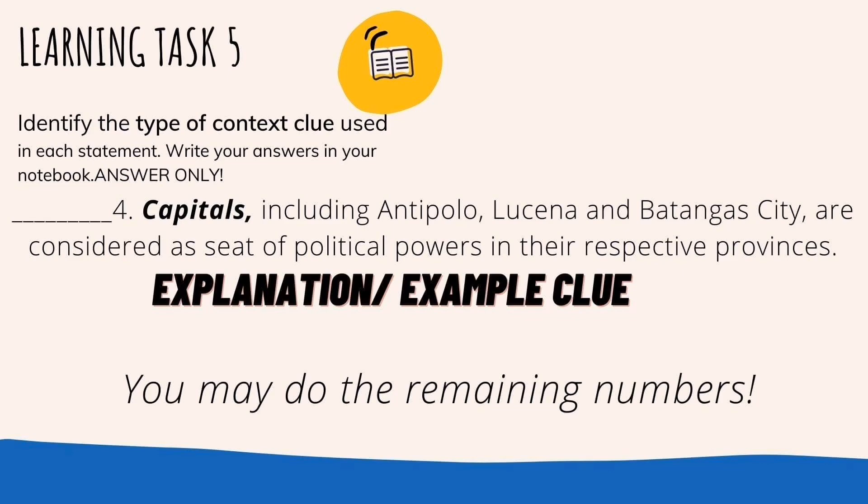Capitals, including Antipolo, Lucena, and Batangas City, are considered a seat of political powers in their respective provinces. The bold word is 'capitals.' From the 7 types of context clues, the answer is the explanation or example clue, because it uses the word 'including' and includes samples of capitals of some places. You may now do the remaining items in learning task 5.